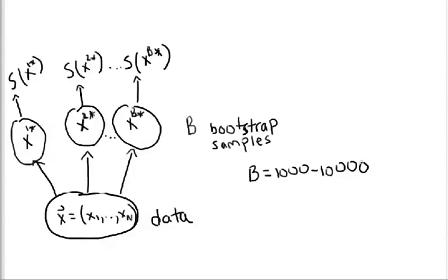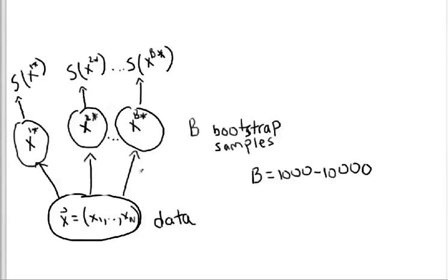We create B bootstrap samples, denoted as x star. Each of these x stars is computed by sampling with replacement from our original sample vector, such that we could get the same sample value in a given array more than once.